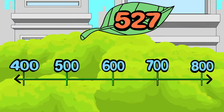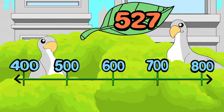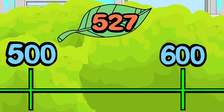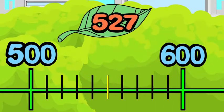To the nearest hundred tells you to choose the hundred before 527 and the hundred after 527. 500 is the lower benchmark and 600 is the higher benchmark. Now you can set up a number line and mark your benchmarks.